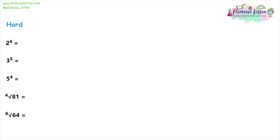Moving on to the hard questions: two to the power of four means four twos all multiplied together. Work it out one step at a time: two times two is four, four times two is eight, and eight times two is 16.